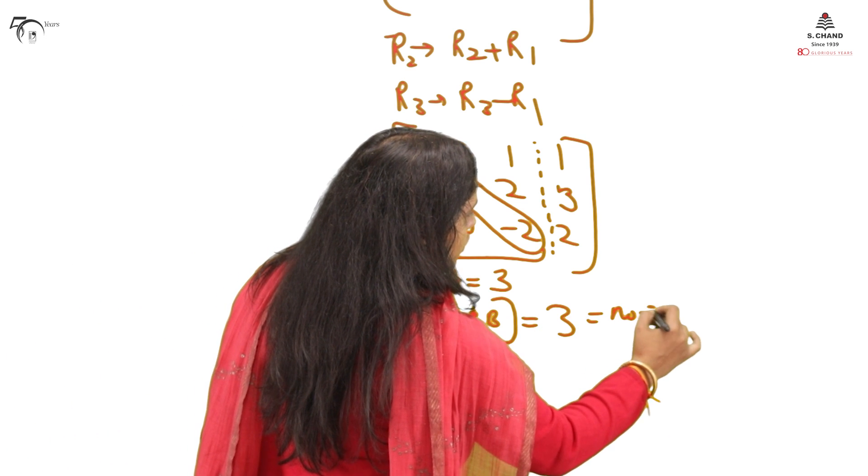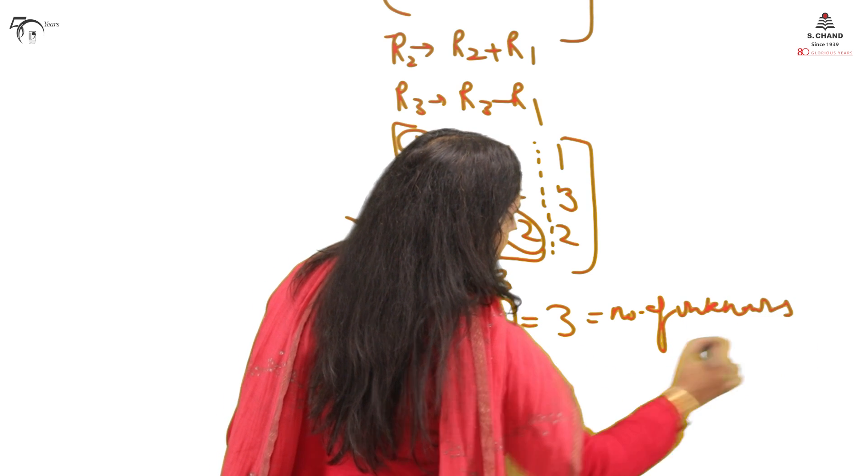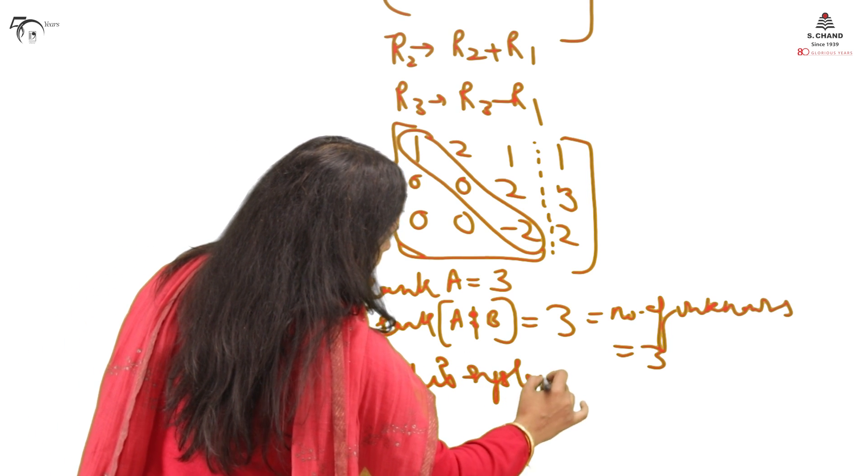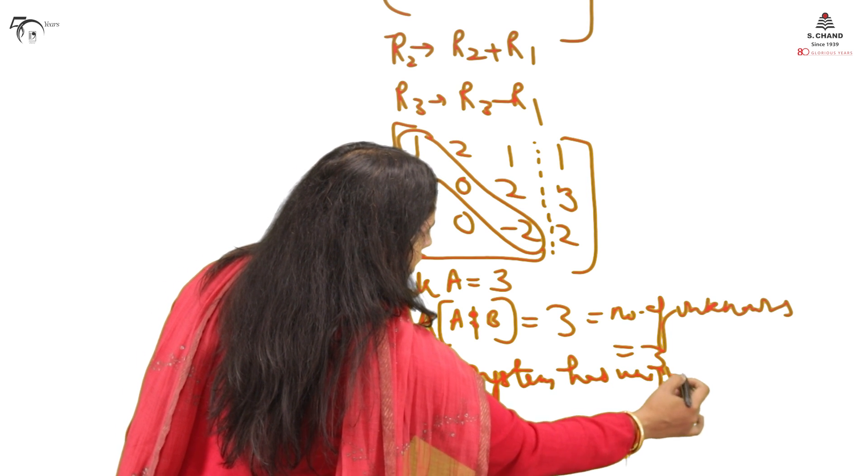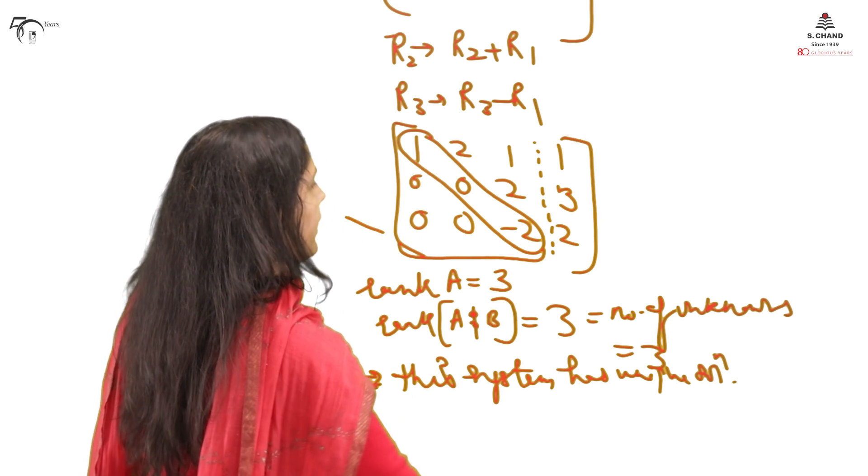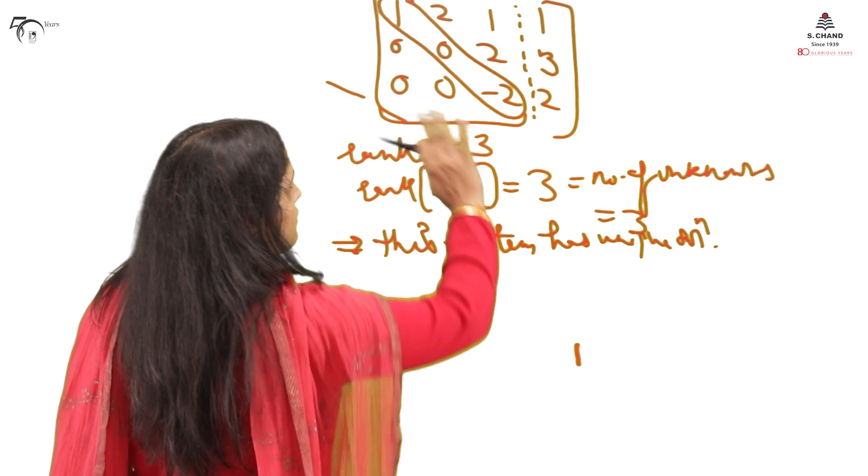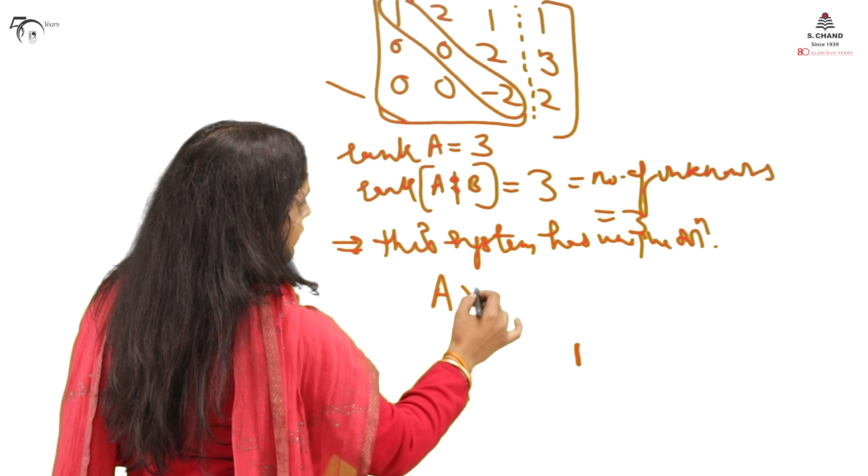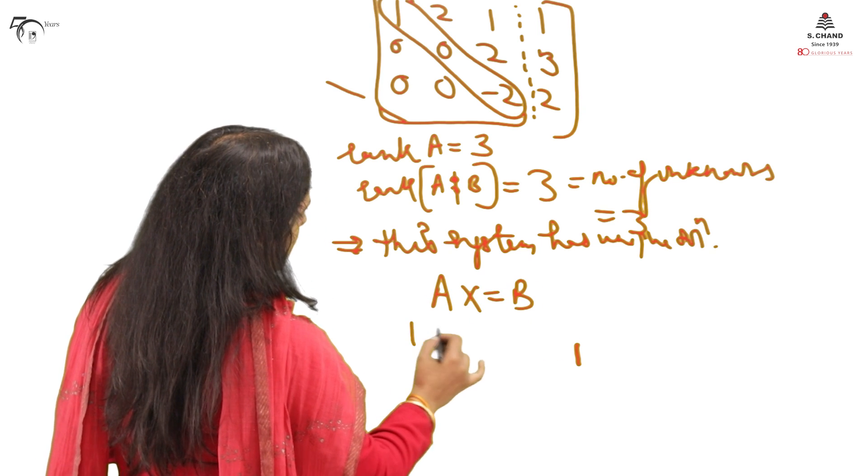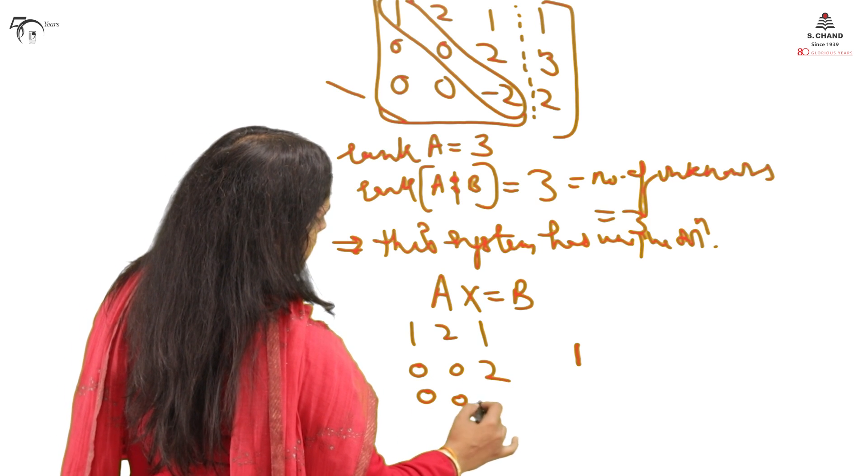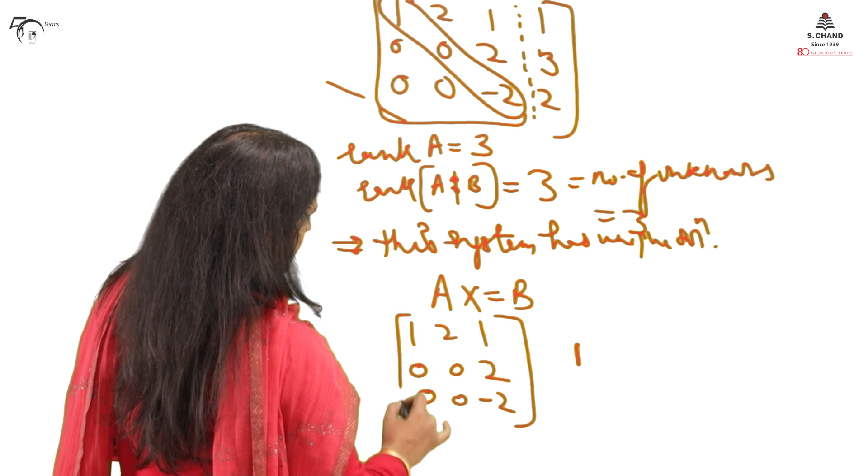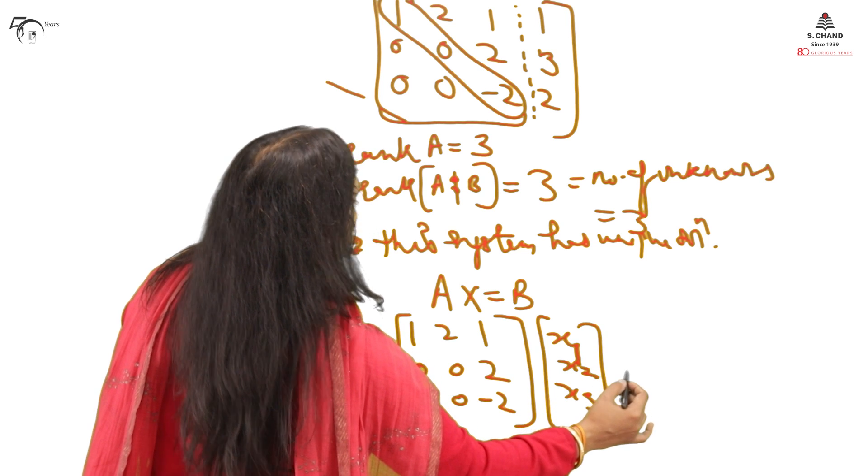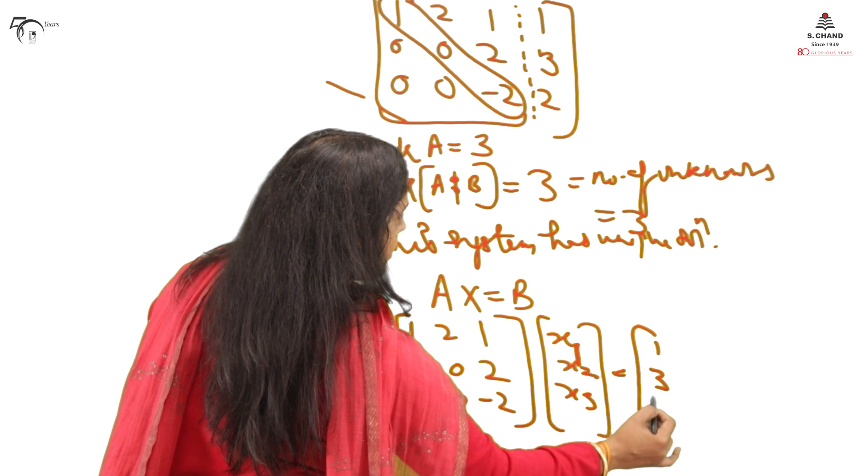The rank of A is equal to rank of A augmented B equal to 3, and this is equal to the number of unknowns, that is 3. It means the system has unique solution. The system has unique solution. And how to find that solution now? How to do it? I will just again break it up as AX = B. This system, this is my A, this is my B. Write it again one more time. My system is finally [1, 2, 1; 0, 0, 2; 0, 0, -2] and x1, x2, x3 equal to [1, 3, 2].